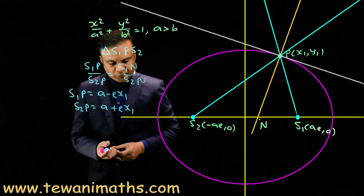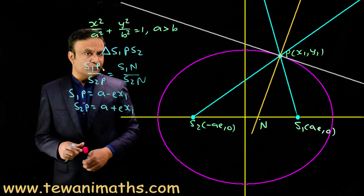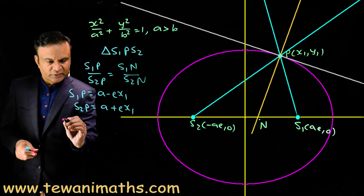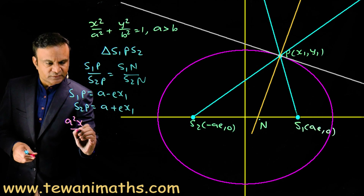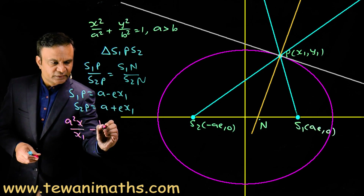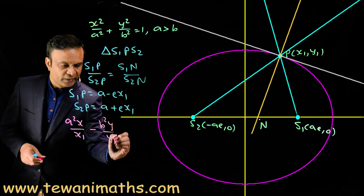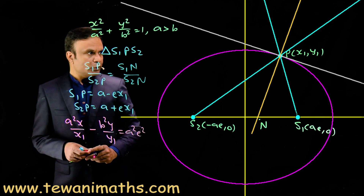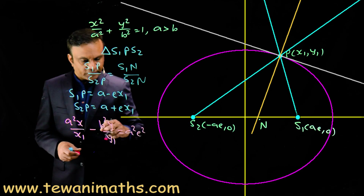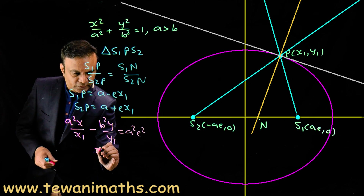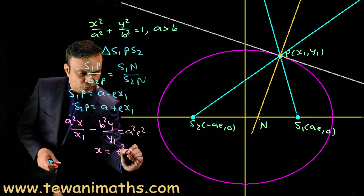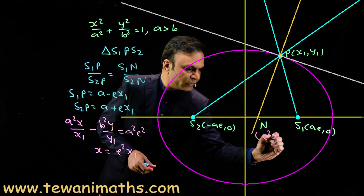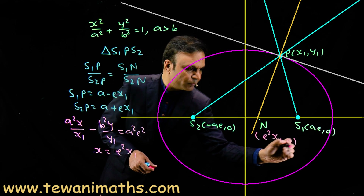Let us find the coordinates of point N. For that I require the equation of the normal. The standard equation of normal is: a²x / x1 − b²y / y1 = a²e². For point N I put y = 0, so I get x = e²x1. Therefore the coordinates of point N are (e²x1, 0).